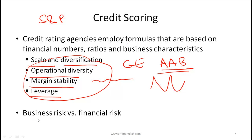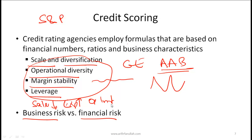When looking at credit scores and ratings, we should also consider business risk versus financial risk. Business risk is the risk inherent in a business — for example, sales might end up less than expected, or expenses more than expected, resulting in lower operating income than expected. Financial risk is the risk companies take on because of leverage; companies with high levels of debt will have higher financial risk.